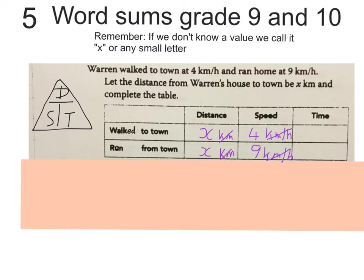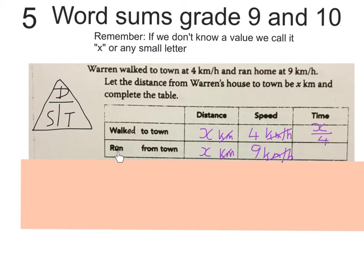Now this triangle will become very important. Remember in word sums we don't always get numerical answers right away, and we have to work out the time that he walked and the time that he ran — that's the confusing part. We have to understand that distance divided by speed will give us the time. Although we don't have an actual distance value, we do have a speed, and we can write these together mathematically to find the time — that's distance divided by speed. So the time that he walked was x divided by four, which is x over 4. The time he ran will be x over 9. This is the time that he walked and this is the time that he ran.